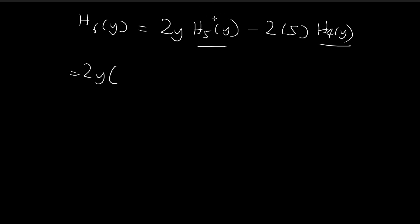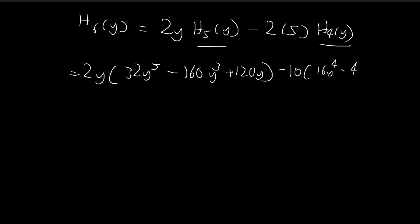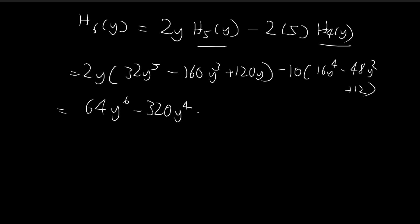Substituting the two polynomials: h5 of y equals 32y to the power of 5 minus 160y to the power of 3 plus 120y, and h4 of y equals 16y to the power of 4 minus 48y squared plus 12. Expanding the brackets, we get 64y to the power of 6, minus 320y to the power of 4, plus 240y squared, and then minus 160y to the power of 4 plus 480y squared minus 120.